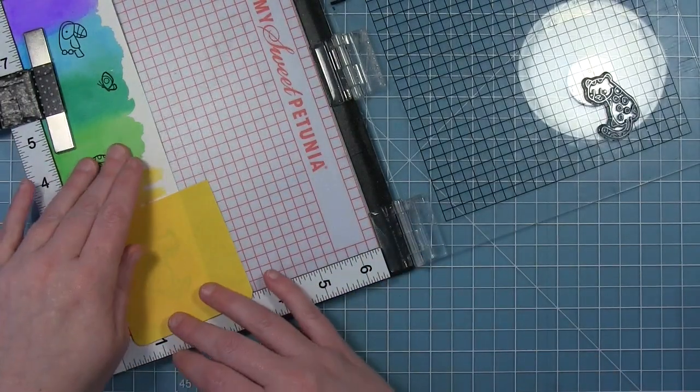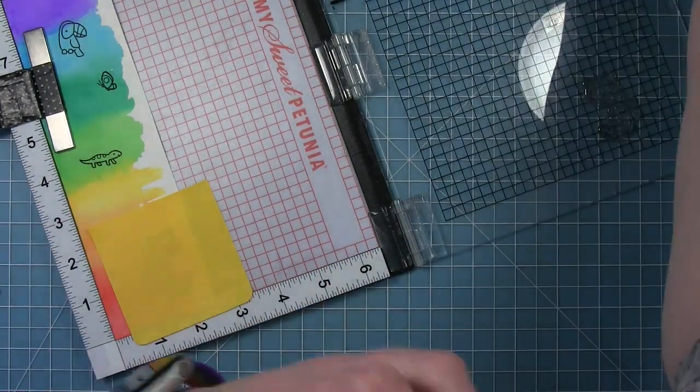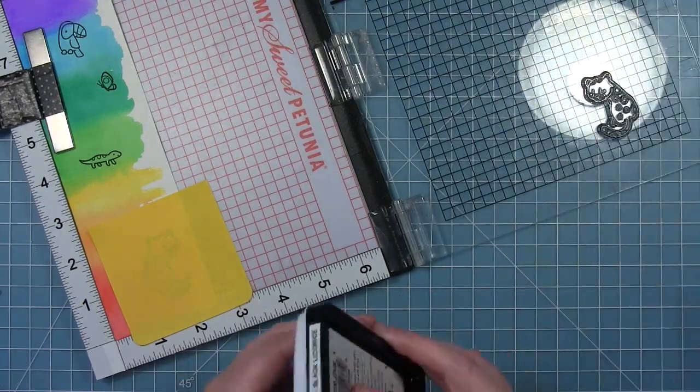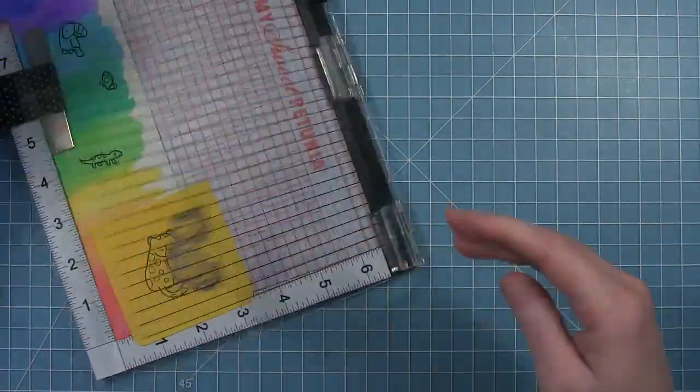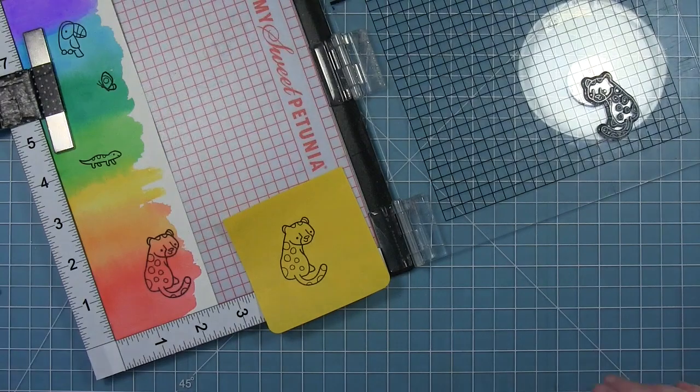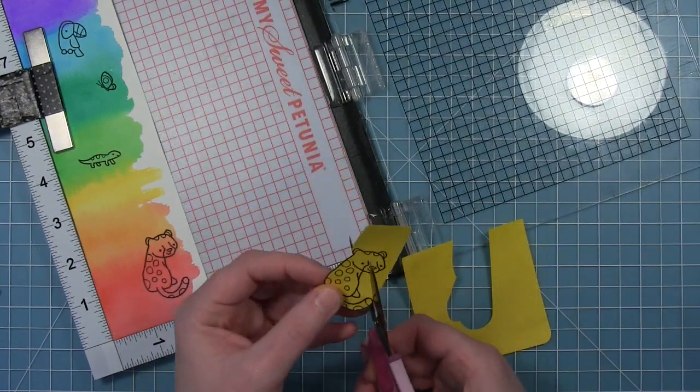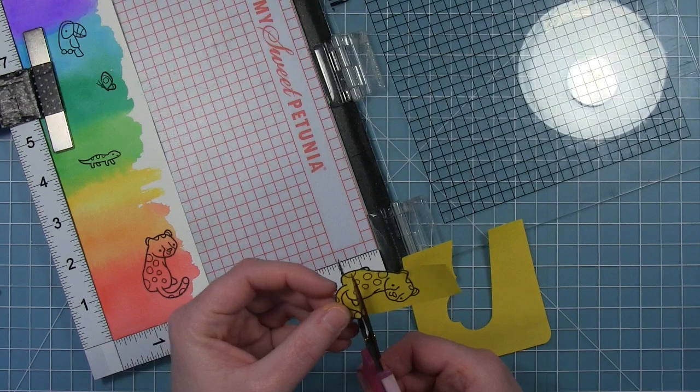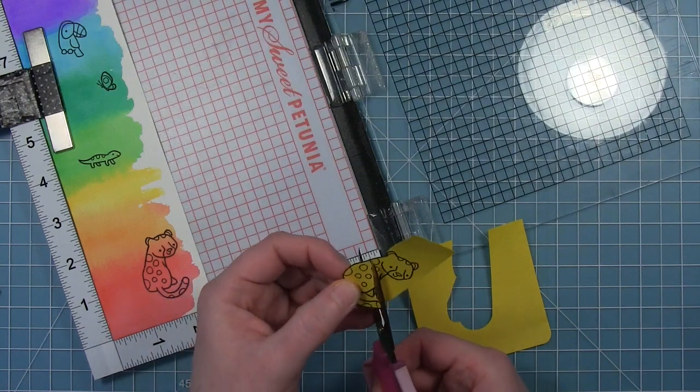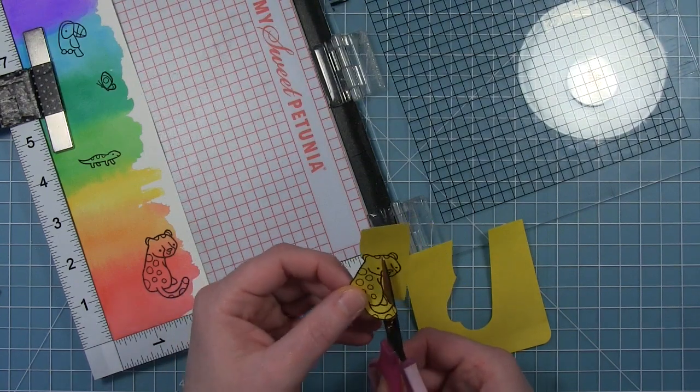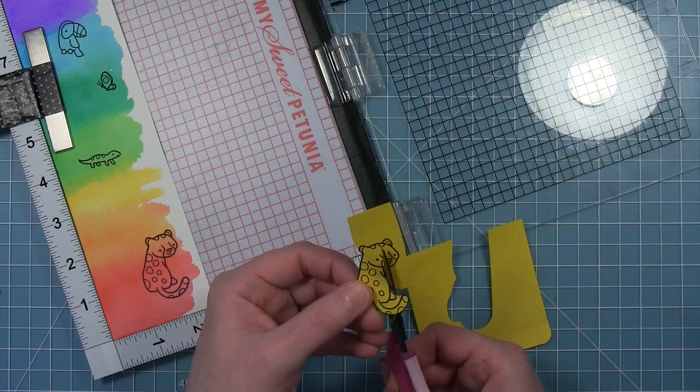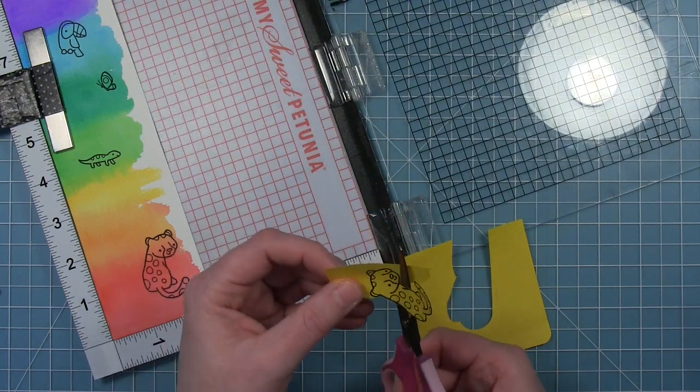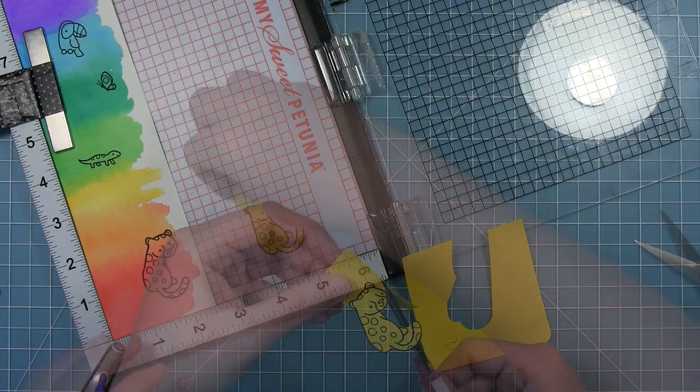So what I'm going to do is create a mask, just with a post-it note. And while this is in my MISTI, I'm just going to go ahead and stamp that down. And then I can take my scissors and cut around it to create a mask. I really only need to worry about masking off the bottom, so I'm just going to leave that little piece on top of her head. It's a great thing to grab onto to place this on the paper.